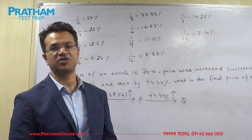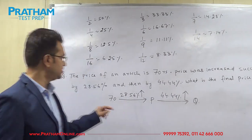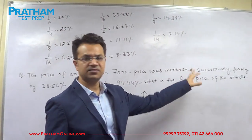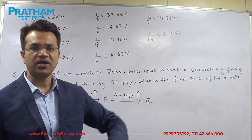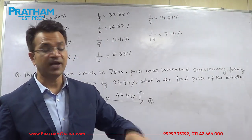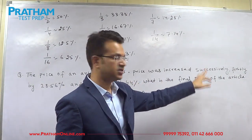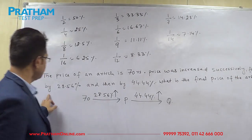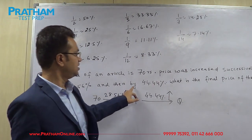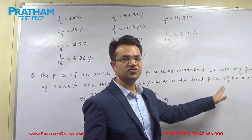What is the beauty of knowing this — we want to discover through an example. The question is: the price of an article is 70 rupees. The price was increased successively — meaning one after the other. The first increment happened, we arrived at a price, and on that price the second increment happened. Firstly by 28.56 percent, and then by 44.44 percent. What is the final price of the article?